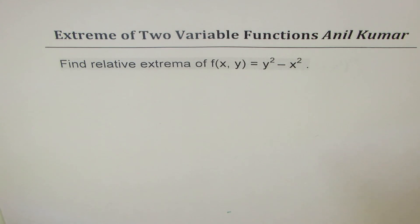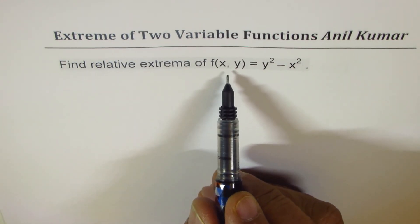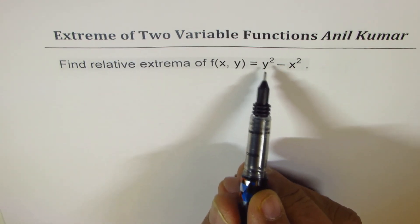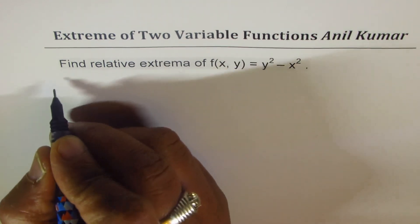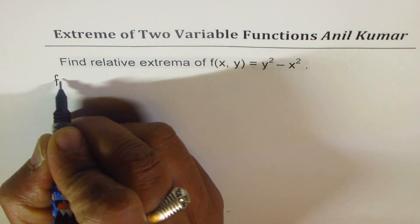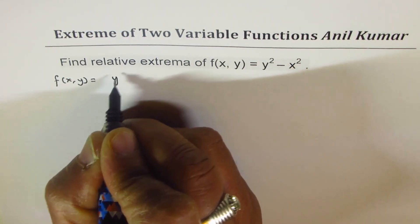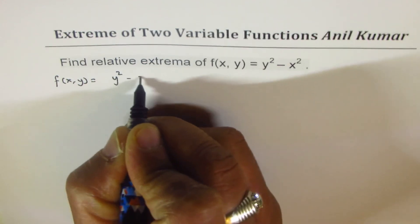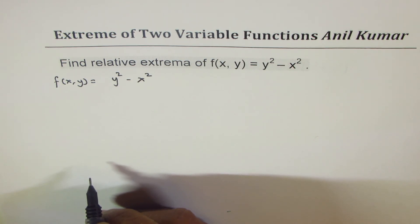Now let's find the relative extrema for the function f(x,y) = y² - x². You can pause the video, follow the steps we did earlier, and then match my solution.